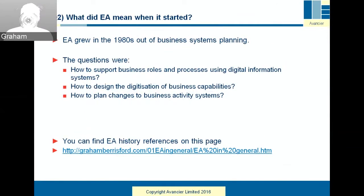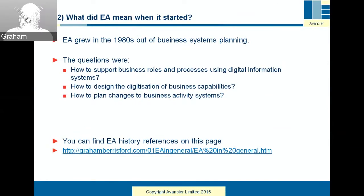What did EA mean when it started? Most people would trace it back to the beginning of the 1980s. IBM had a methodology called business systems planning. Basically, they were trying to sell mainframe computers, but they realized they couldn't just take a big box into an enterprise and say, would you like one? It has to be sold on its use — how to support roles and processes using information systems, how to design the digitization of business capabilities. Those were the messages 37 years ago.